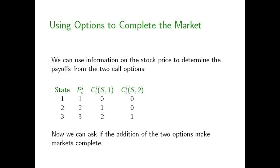So we've now got three assets: the stock and the two calls with different strike prices. And now we can ask: does the addition of the two options make markets complete? Can we use this information to make inferences about the prices at which contingent claims for each of the states would trade?